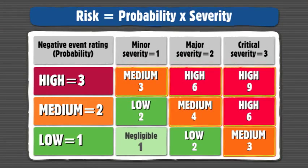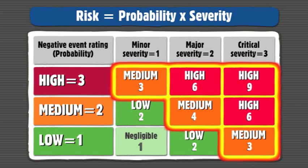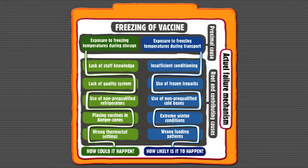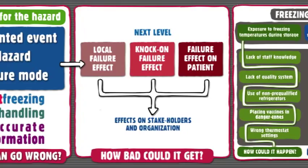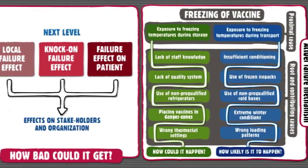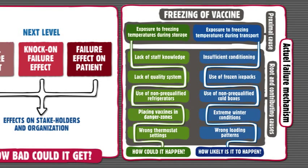The first step is to determine how to treat the risks. For those risks that must be or should be reduced, you have three options. If you can prevent the unwanted event from happening, that would be your first choice — we refer to this as control. For example, one way to prevent the freezing of vaccines is not to expose the vaccine to zero degrees C. This might mean not shipping the vaccine during cold winter conditions or not exposing the product to a block of cold blue ice that might cause it to freeze during shipment. To successfully prevent the unwanted event, you need to know something about the failure mechanism. If you don't know the failure mechanism, any control you put in place would be a waste of time and money.